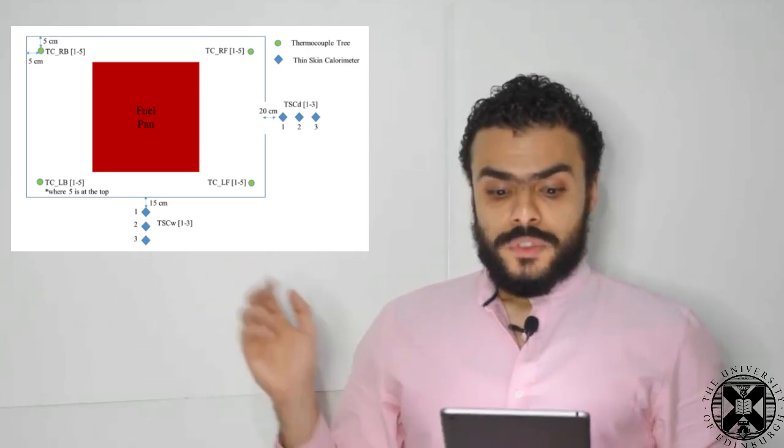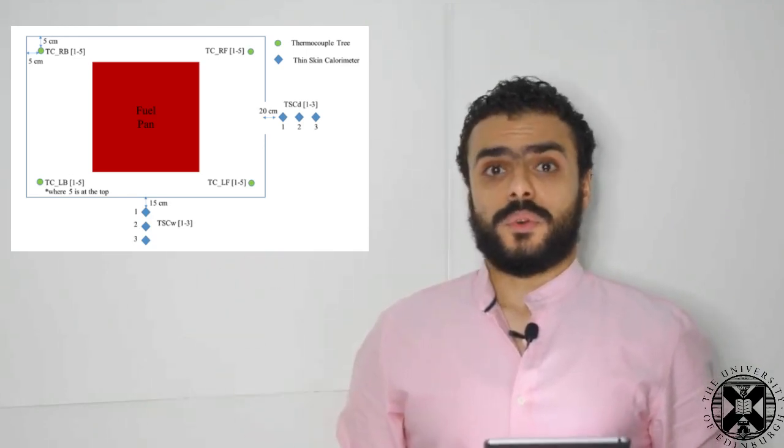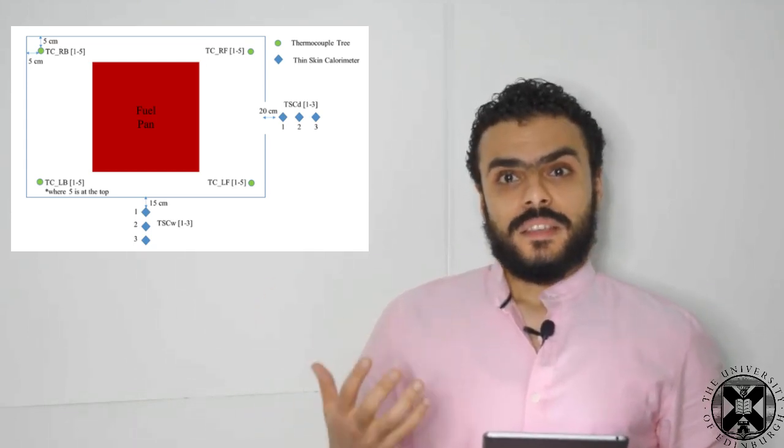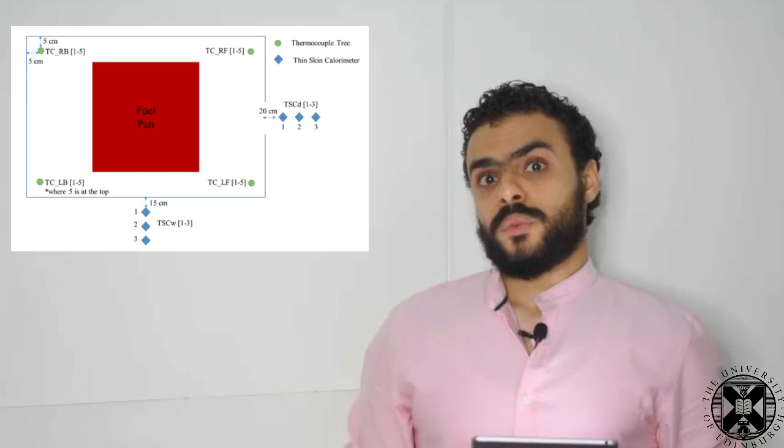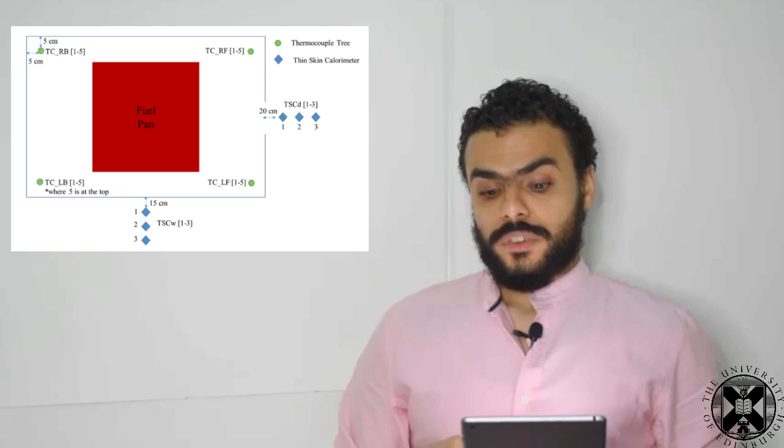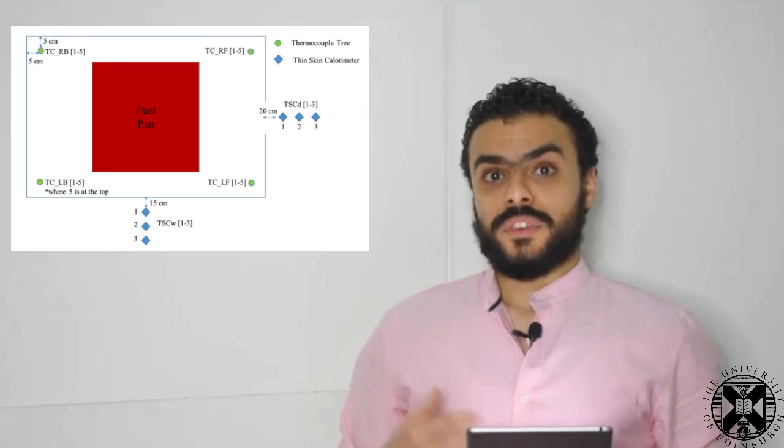For the measurements, we used thermocouples at the four corners, thermocouple trees at the four corners to capture the gas layer temperature. And also we used TSCs at the front door and at the sidewall to measure the heat fluxes from the compartment. To measure the velocity, we added bi-directional flow probes at the door at three different locations.